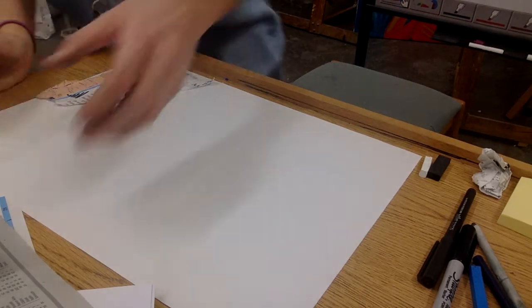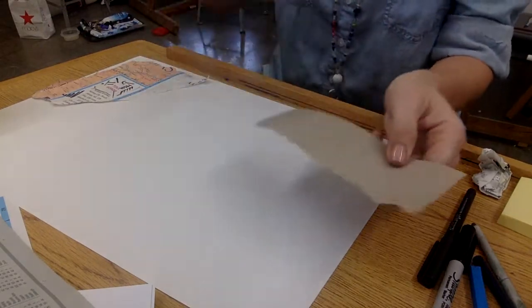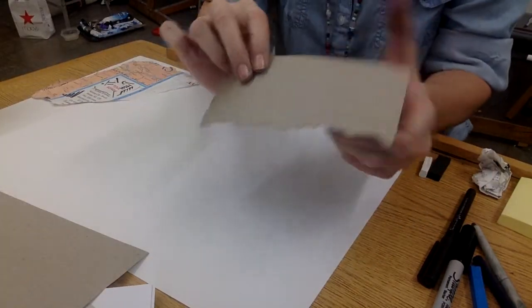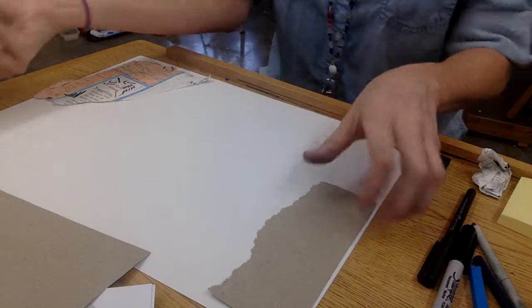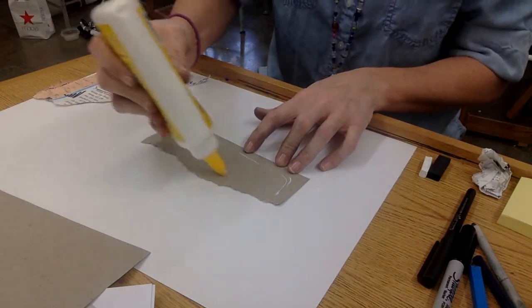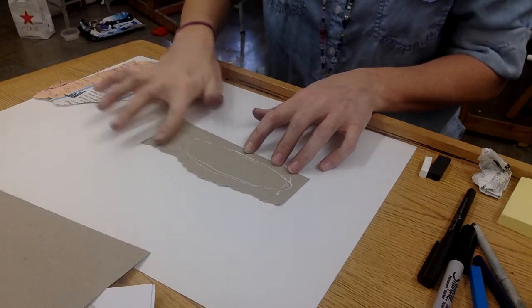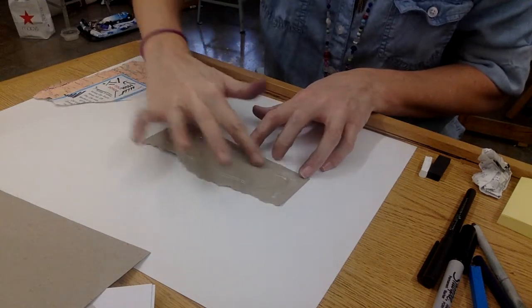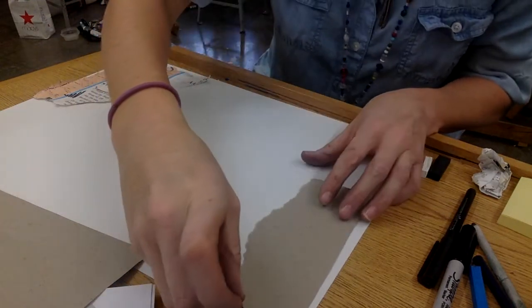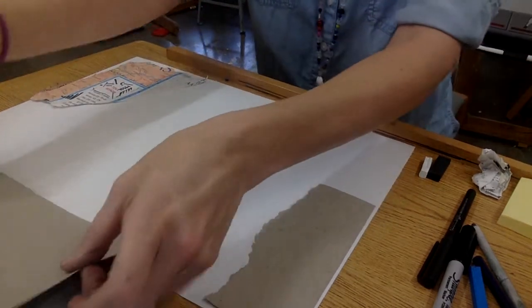So just start tearing. I like having a more deckled edge and placing. Try not to glue directly through the middle of the paper to avoid it being wrinkly. I also like to smooth the glue down a bit so it doesn't bubble a lot, keeping it smooth.